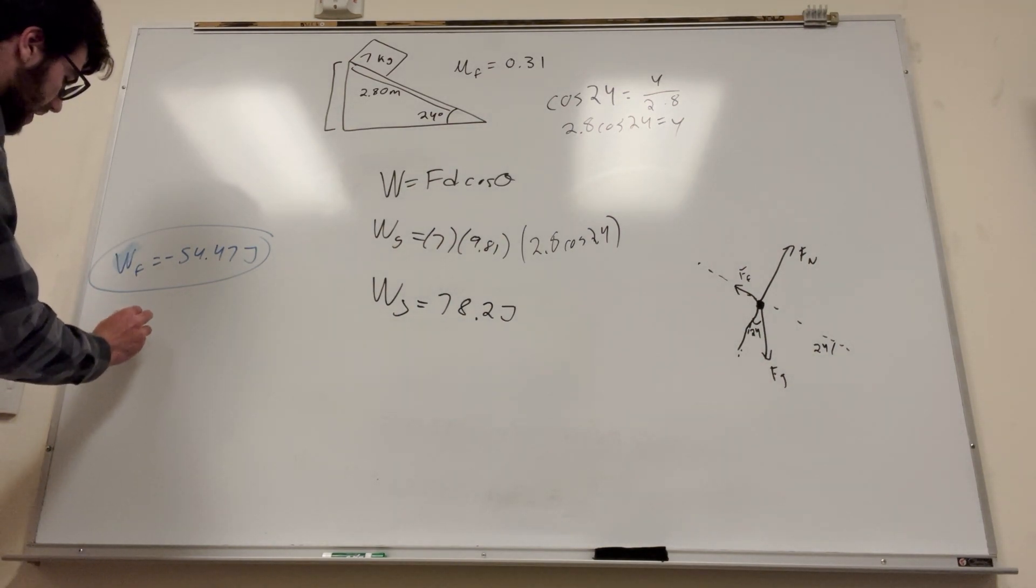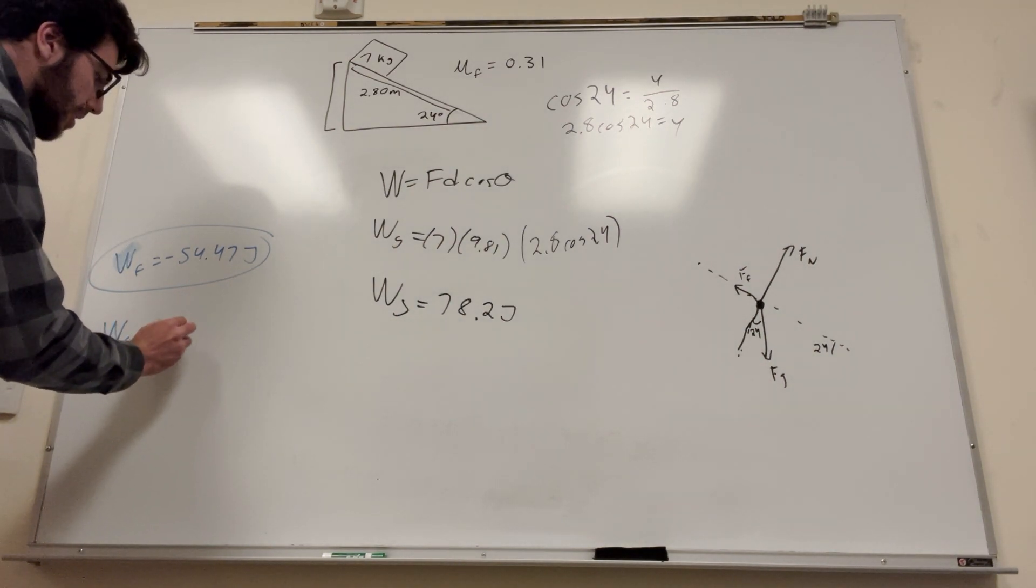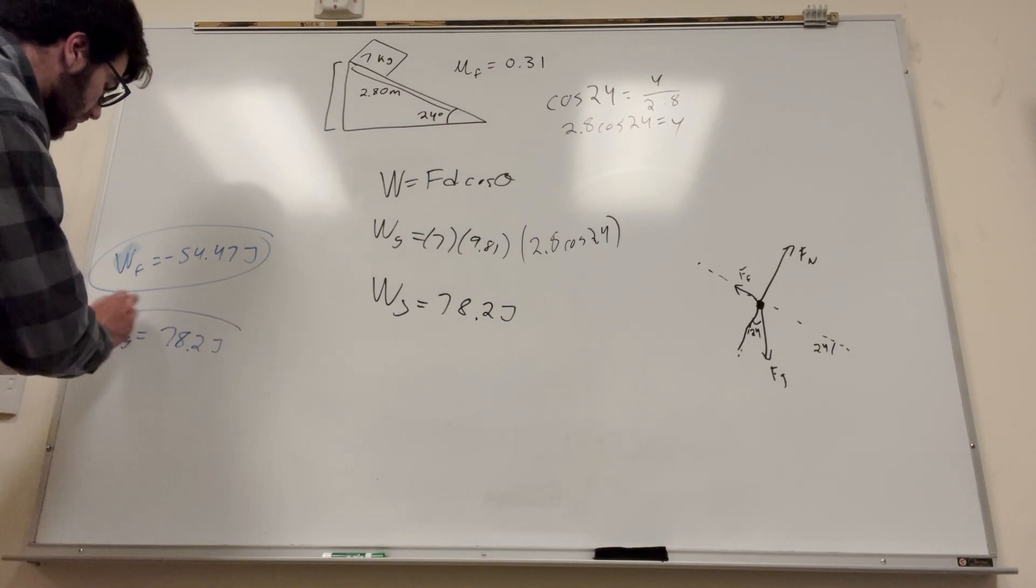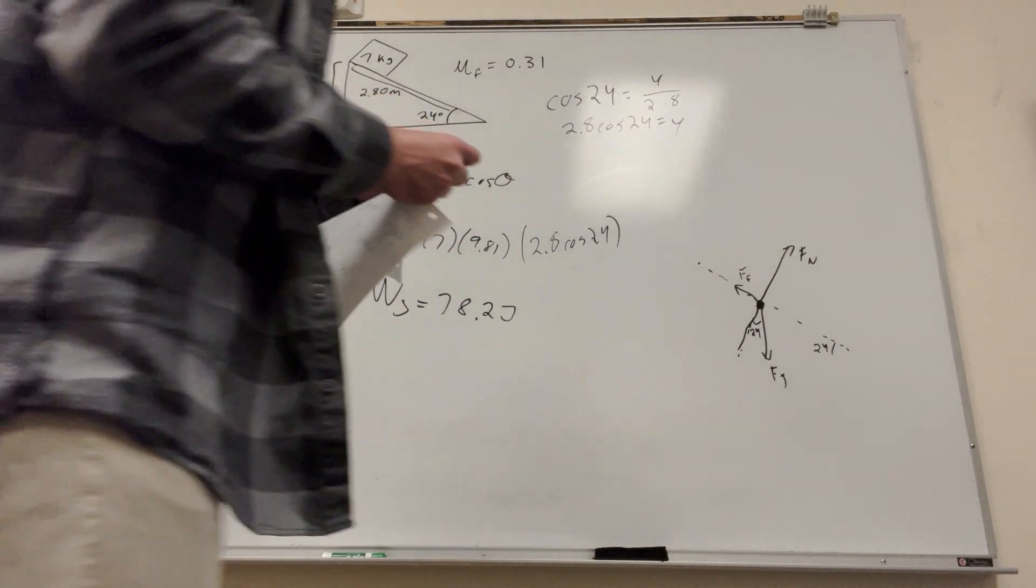So work done by gravity is equal to another number. This is going to be equal to 78.2 joules. So that's how much work it took for gravity to pull that block down. Work by gravity is equal to 78.2 joules, part 2. All right, now on to part 3.